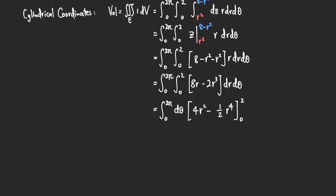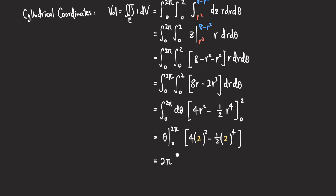The θ integral gives us 2π. Plugging r equals 2 into (4r squared minus one-half r to the fourth): 4 times 4 is 16, and one-half times 16 is 8, so we get 16 minus 8 equals 8. Plugging in 0 gives 0. So the result is 2π times 8, which equals 16π. That's the volume of the solid.